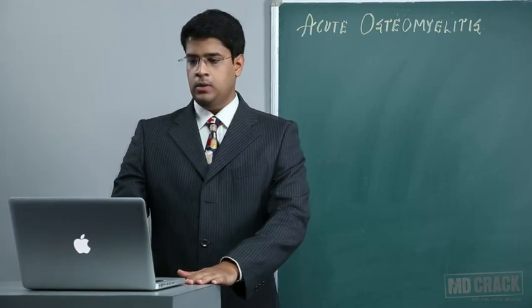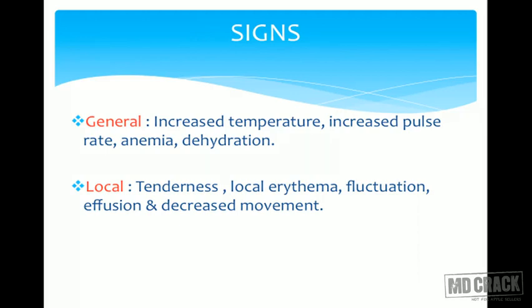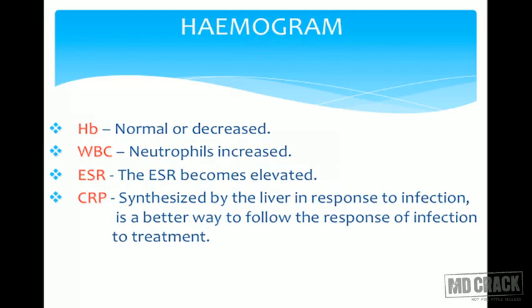Clinical features — symptoms: generally the patient has fever, sweating, chills, rigors, and can come in a state of shock. Locally there is swelling at the affected area, erythema and redness, and limitation of movement because the child doesn't like to move due to pain. Signs: increased temperature, warmth, increased pulse rate, anemia with low hemoglobin, weakness and dehydration. Locally there is tenderness, erythema, signs of inflammation, fluctuation if swelling is present, effusion, and decreased range of movement.